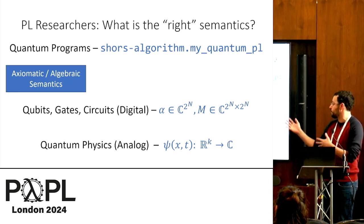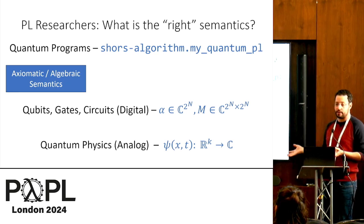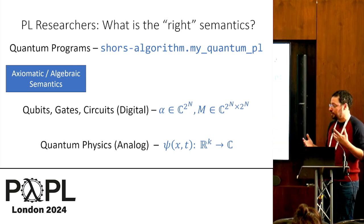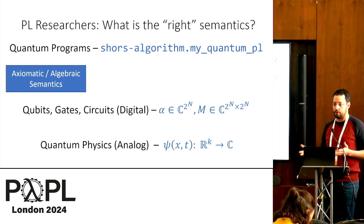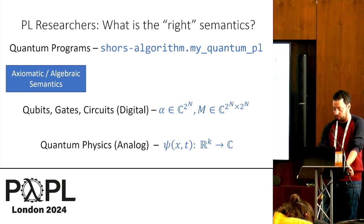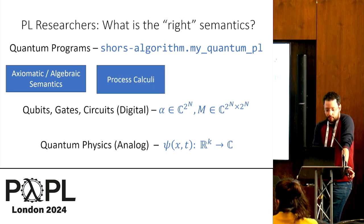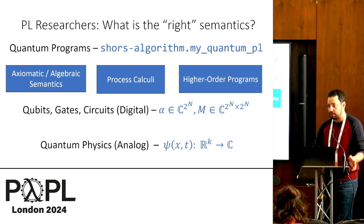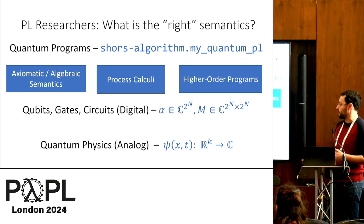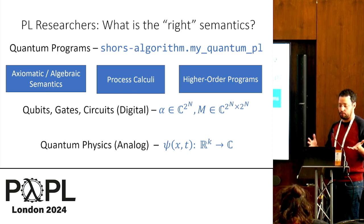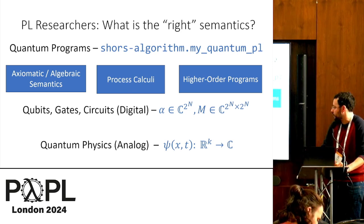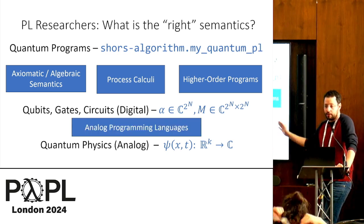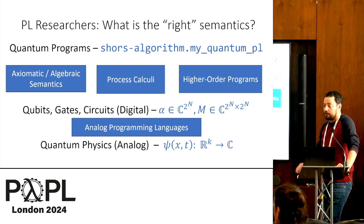But we are very interested in trying to describe more abstract semantics than these things. And for example, we would like to have some sort of axiomatic or algebraic semantics that would let us analyze programs without really resorting to this low-level thing, much similar to how we do in classical computing. We don't usually use the bit-level semantics to reason about programs. So we can have axiomatic or algebraic semantics. We can have process calculi. We can consider higher-order programs. And we have some classical features we want for these semantics, like we want them to be sound, maybe we want them to be complete, or we want them to abstract. We want them to maybe be fully abstract.